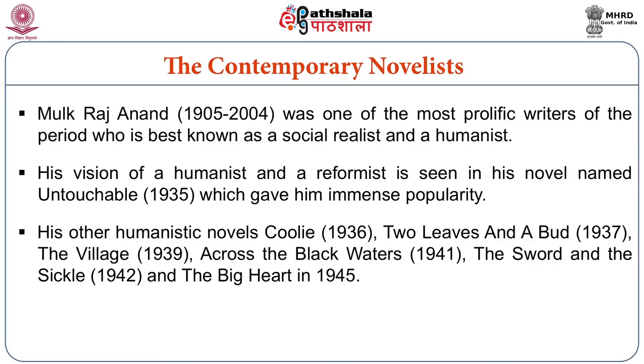Mulkraj Anand is one of the most prolific writers in Indian fiction. Like Rabindranath Tagore, he contributed extensively to Indian English literature. His first novel, The Untouchable, was published in 1935 and presents his concerns for the oppressed and downtrodden sections of society. Some of his humanistic novels are Coolie, Two Leaves and a Bud, The Village, Across the Black Waters, The Sword and the Sickle and The Big Heart.